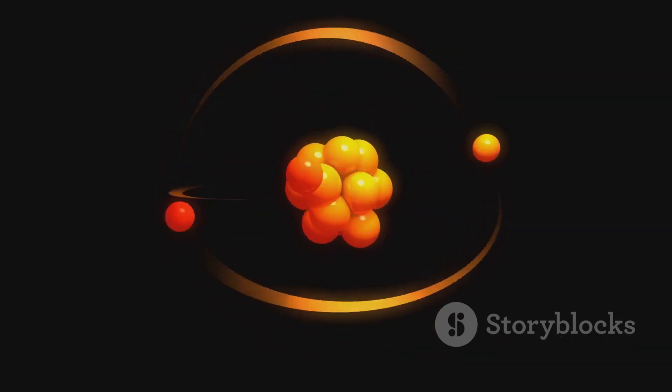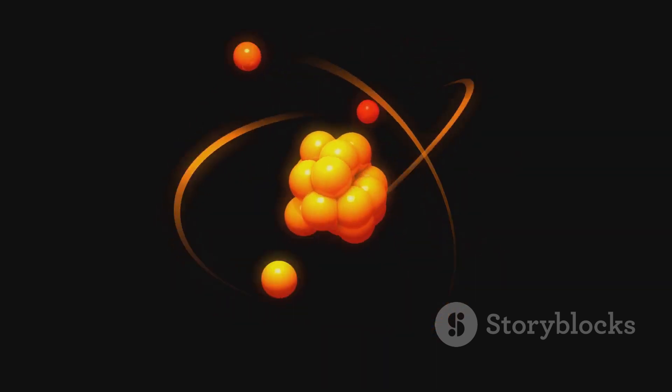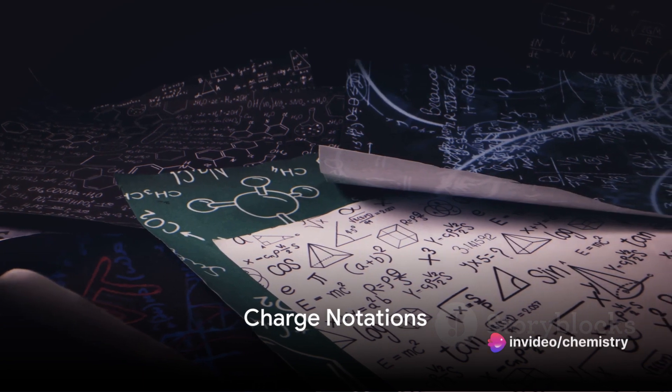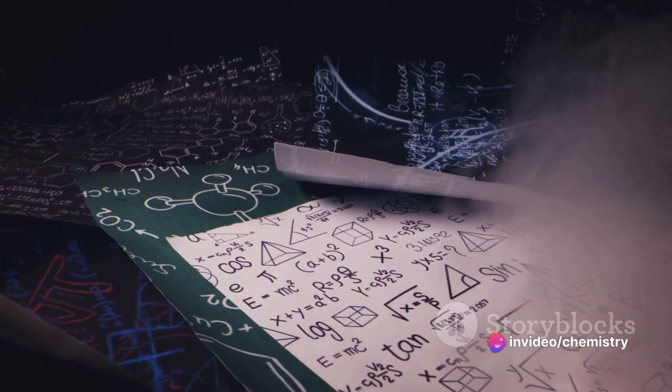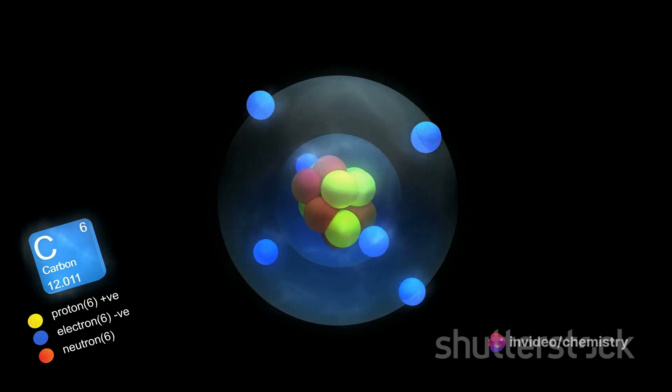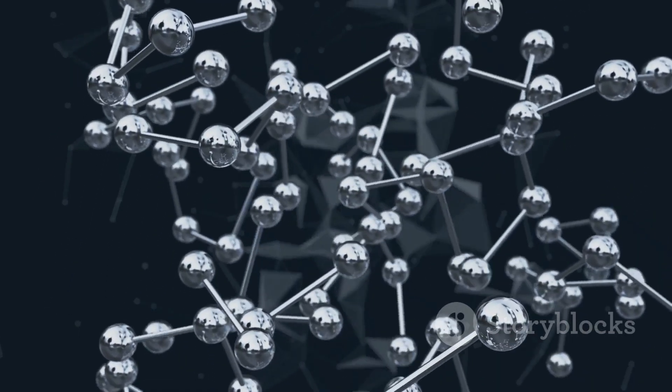It tells us which atoms are near each other and which ones are far apart. But what about those numbers and letters that sometimes appear next to the symbols? These are called charge notations. They indicate whether an atom has gained or lost electrons.